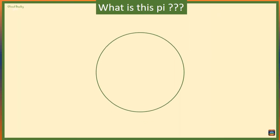Now pi is the relationship between the circumference of a circle and its diameter.